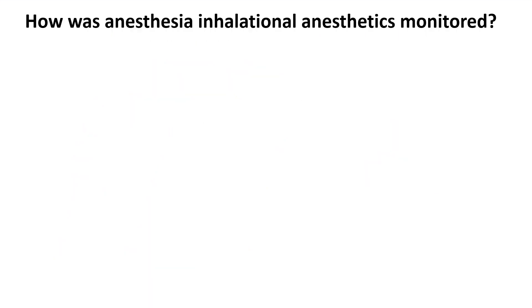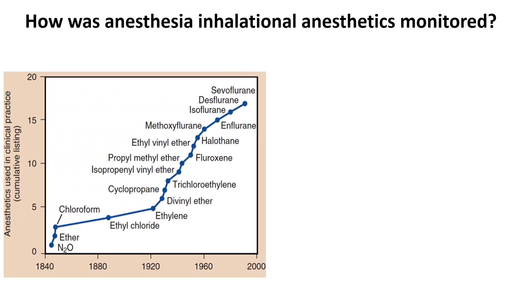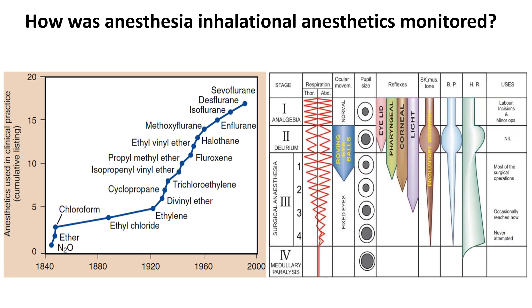Between the 1840s and 1960s, the introduction of newer anesthetic agents necessitated comparisons to determine their potency and appropriate dosing. During this period, the depth of anesthesia was primarily assessed through clinical observations. In 1937, Dr. Arthur Ernest Guedel introduced a detailed classification system known as the Stages of Anesthesia, which relied on various physical signs such as breathing patterns, muscle tone, pupil diameter, lacrimation, and eyelid reflexes to assess anesthetic depth.